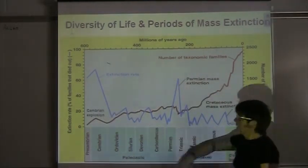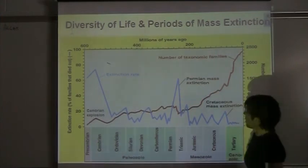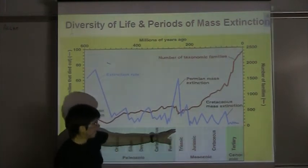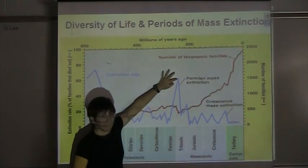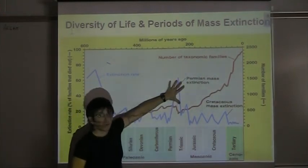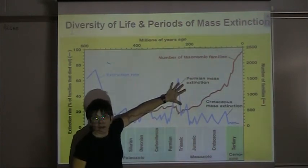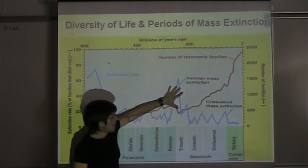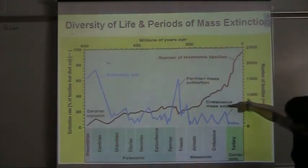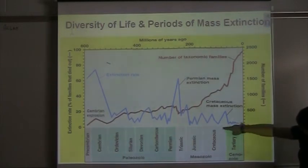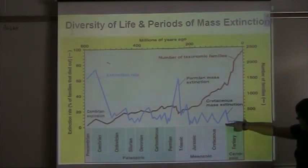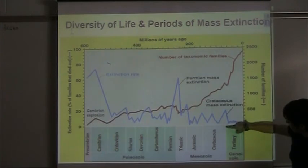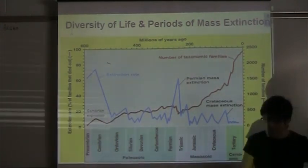Through time we have periods of major extinctions. Between the Permian and Triassic there was a mass extinction — caused mainly by volcanic activity in the Russian shield, so much volcanic activity that the composition of the atmosphere changed dramatically. Then we have the Cretaceous mass extinction at the border between the Cretaceous and the Tertiary — 65 million years ago — the one that got rid of the dinosaurs but allowed mammals to evolve.